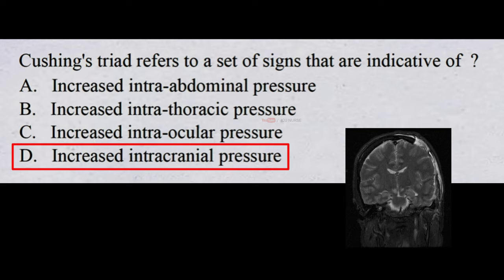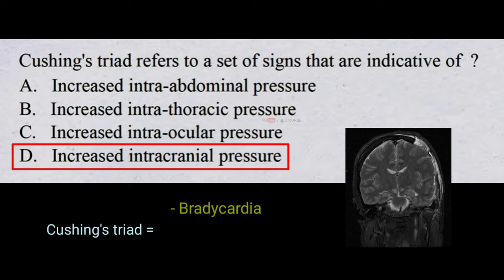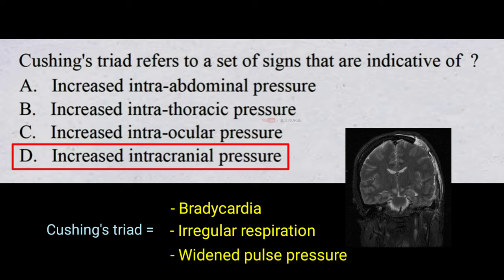Cushing's triad refers to a set of signs that are indicative of increased intracranial pressure, or increased pressure in the brain. Cushing's triad consists of bradycardia, irregular respirations, and a widened pulse pressure.